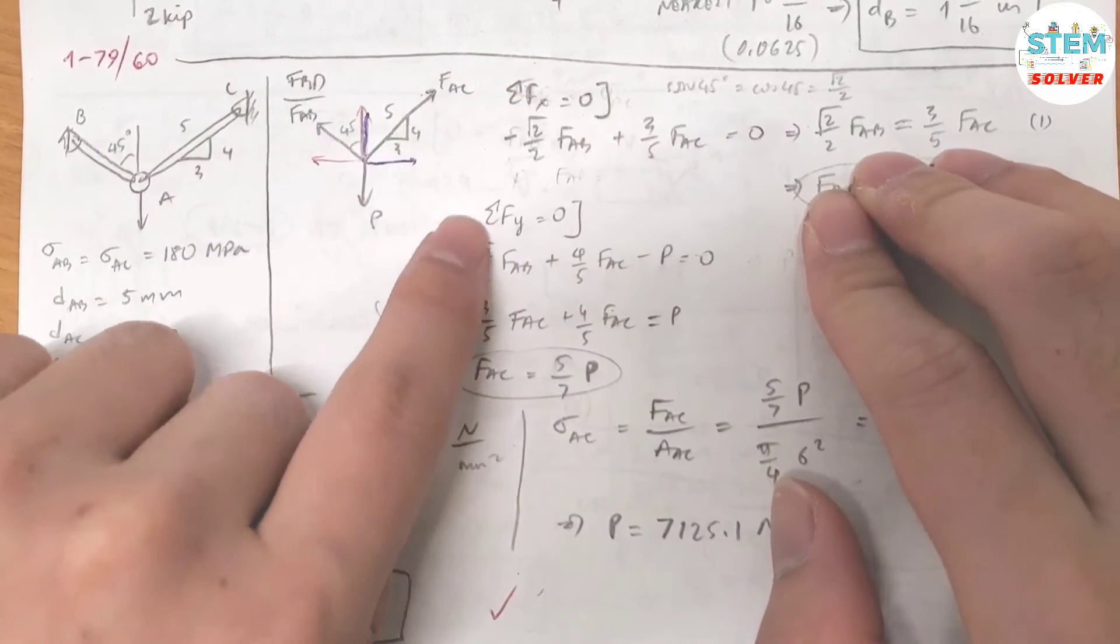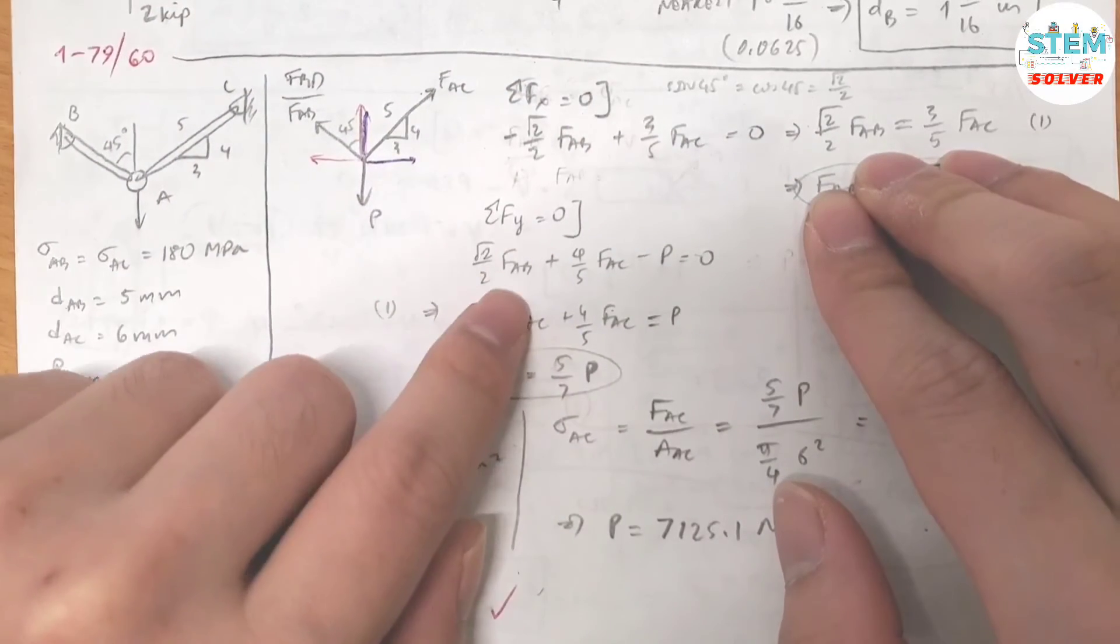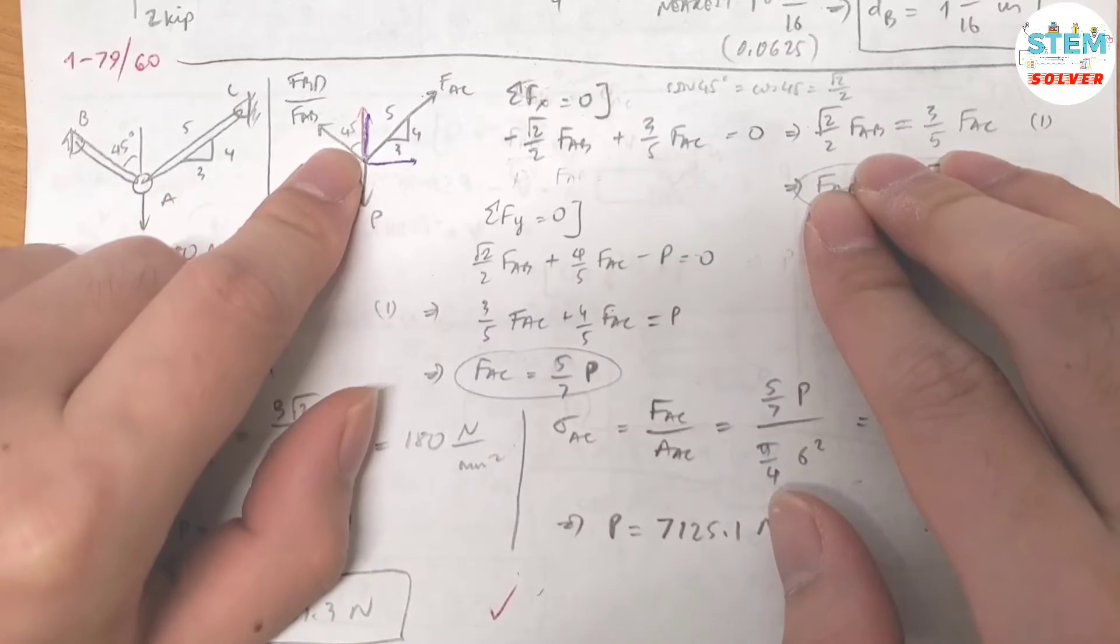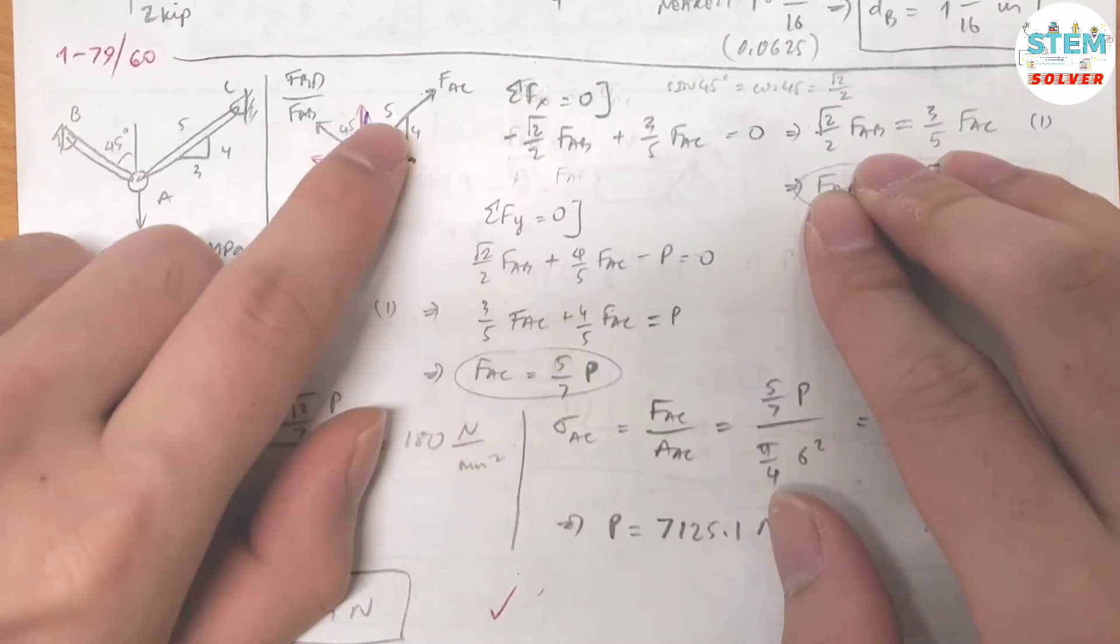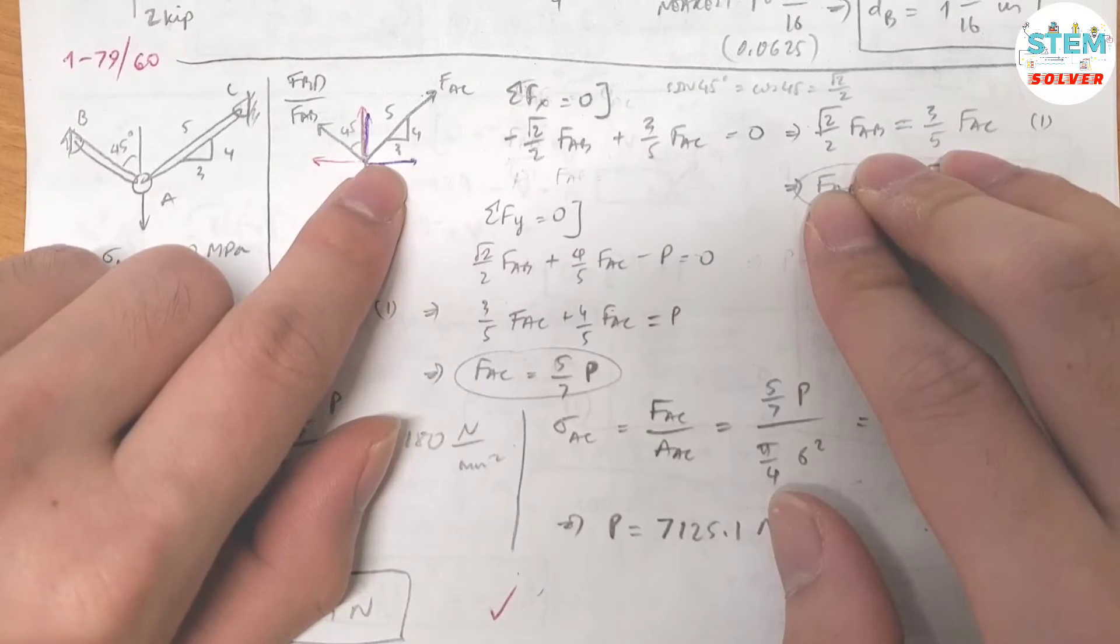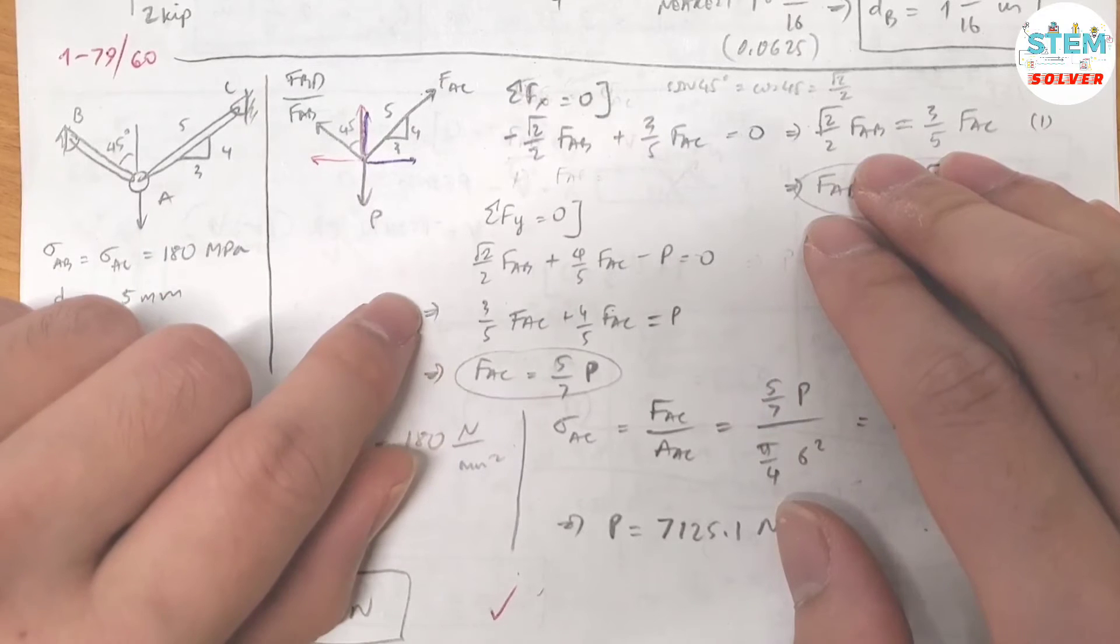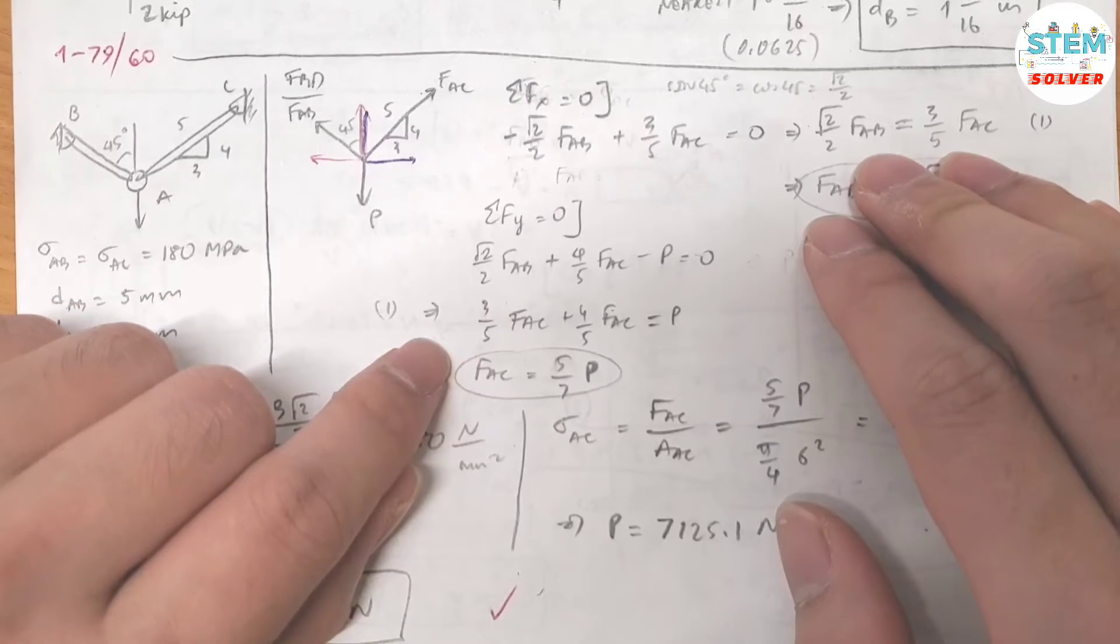Now let's do the summation about y. I have FAB times cosine 45 which is root 2 over 2 plus 4 over 5 times FAC minus P because we have the force P downward here, equals 0. Then solve for... So you have this expression, right, of this equation.